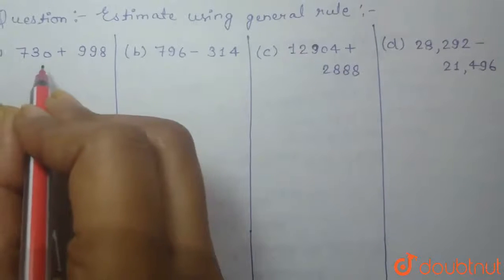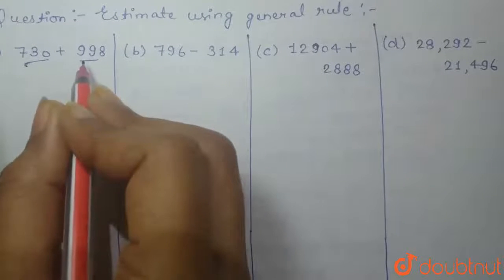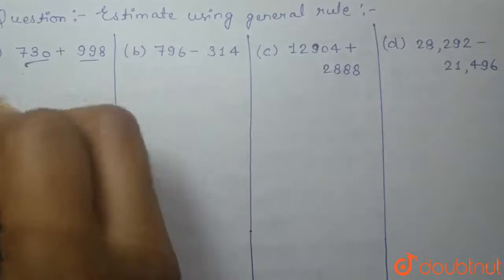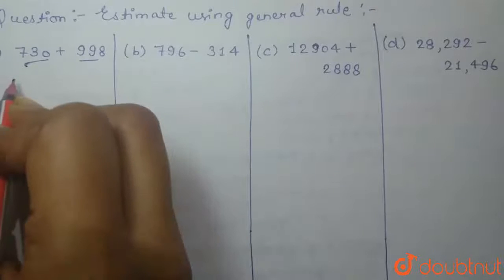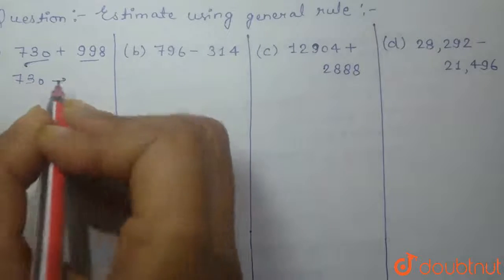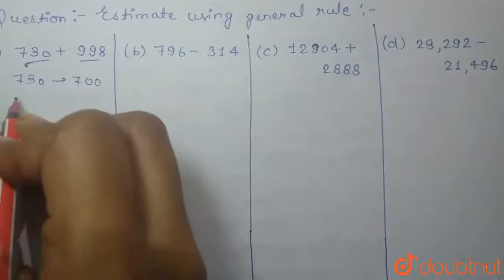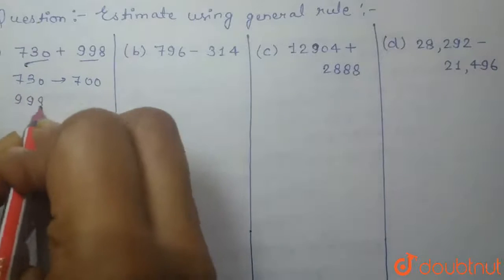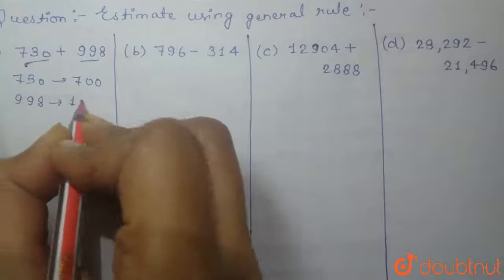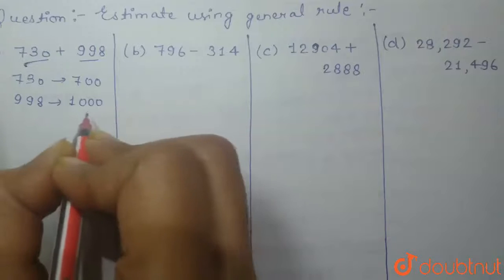So here, we have to take the sum of both these numbers, 730 and 998. So we can see, 730 will be rounded off to 700 and 998 will be rounded off to nearest thousand, which will be 1000.